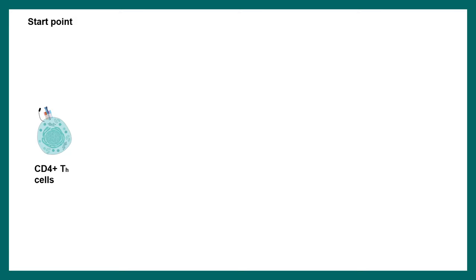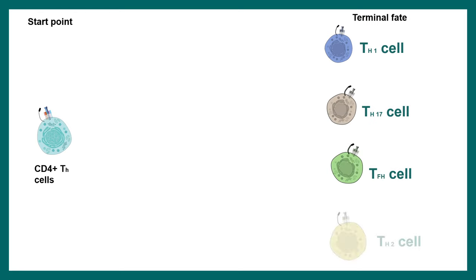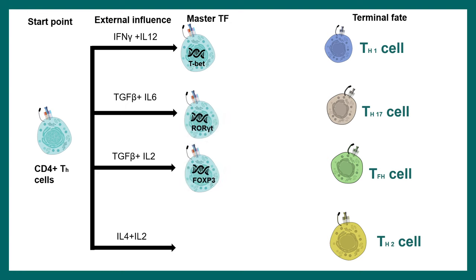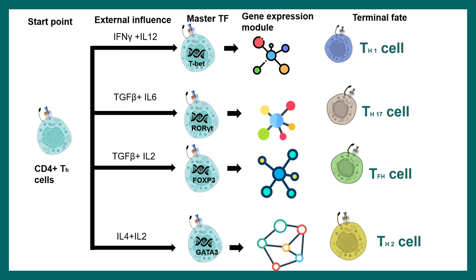In the immune system, CD4-positive T helper cells can ultimately give rise to several different subtypes — Th1, Th17, follicular T cells, Th2 cells, and others. The question is how to create these different cell types from one common progenitor. External influences such as interferons or cytokines trigger the activation of master transcription factors in the CD4 T cell, and depending on which master transcription factor is triggered, a different gene expression module is activated — exclusive to a cell type — leading to specific terminal fates.